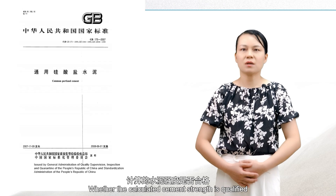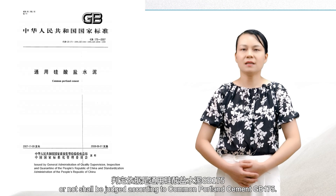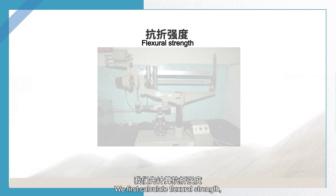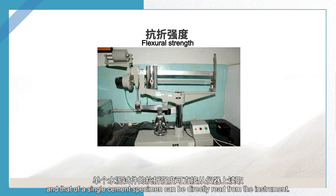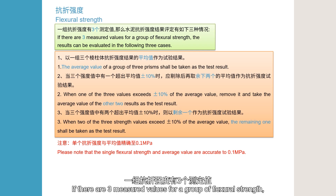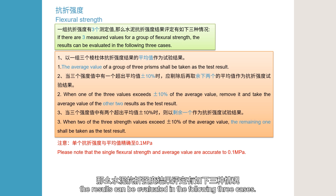Whether the calculated cement strength is qualified or not shall be judged according to Common Portland Cement GB-175. We first calculate flexural strength; the value of a single cement specimen can be directly read from the instrument. If there are three measured values for a group of flexural strength, the results can be evaluated in the following three cases.